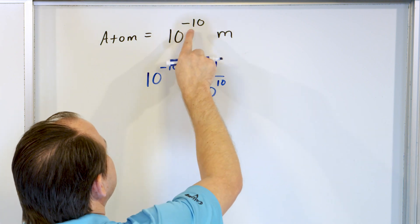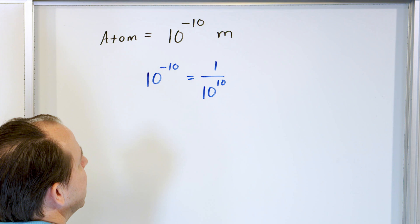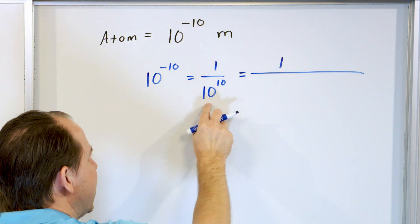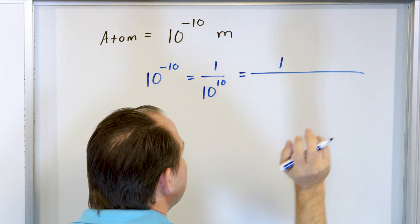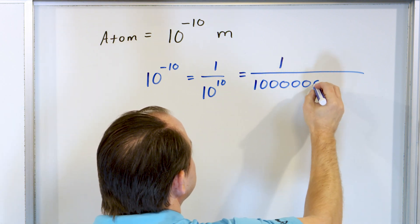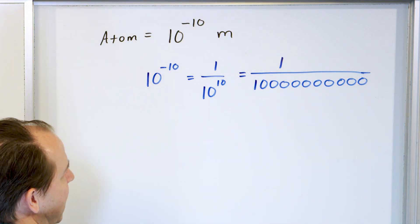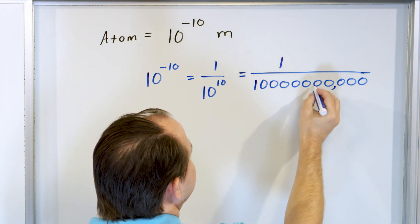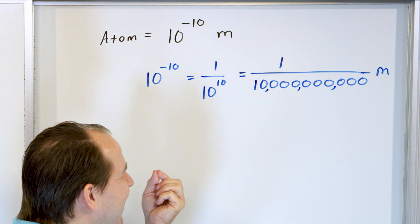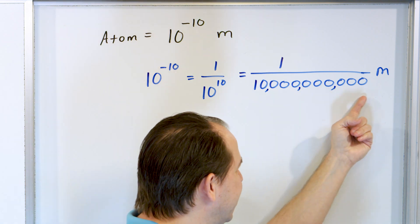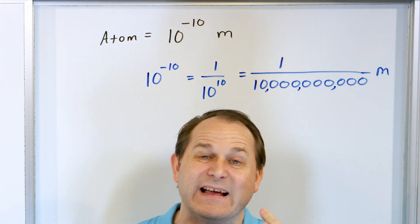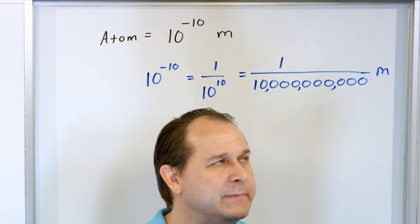So we're saying an atom is 1 over 10 to the 10 meters in the denominator. But what is 10 to the 10 as a number? In the denominator we have 10 times 10 times 10... done 10 times. That's going to be a 1 followed by 10 zeros — that's 10 billion. All of this is in the denominator. So what we're saying is that the typical diameter of an atom is 1 divided by 10 billion meters. Whenever you do this division — 1 divided by 10 billion — that's going to be an incredibly tiny number. That is the size of the fraction of a meter that an atom represents.